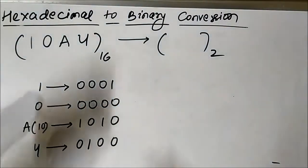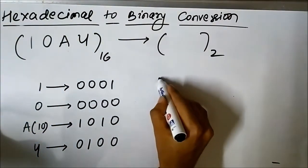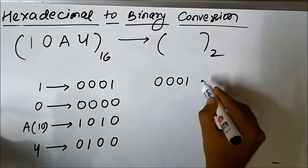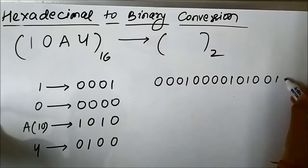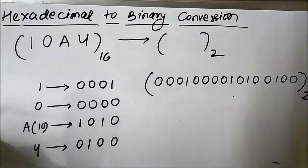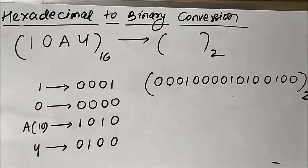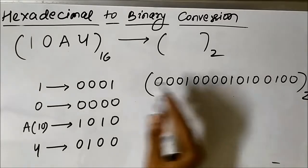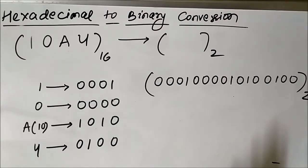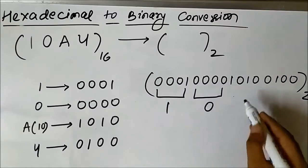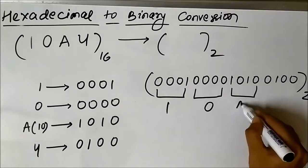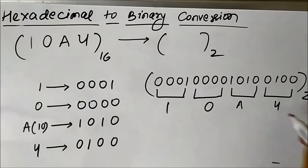So the hexadecimal number 10A4 in binary is written as 0001 0000 1010 0100. Here 0001 is for 1, 0000 is for 0, 1010 is for A (10), and 0100 is for 4. This is the 4-bit representation for each symbol: 1, 0, A, 4 in binary form.